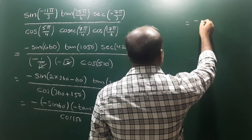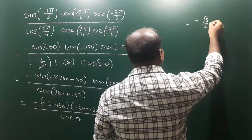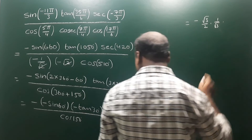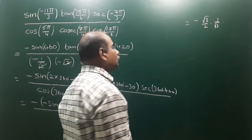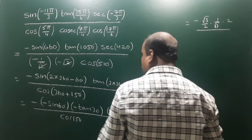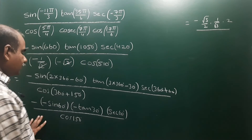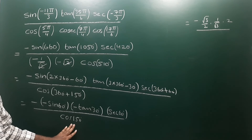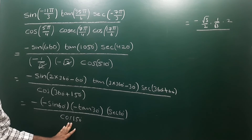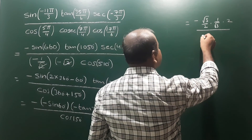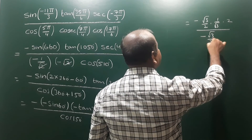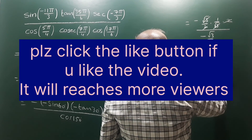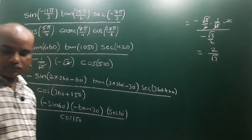So the expression becomes: (-sin 60°) × (-tan 30°) × sec 60° divided by cos 150°. That is: (-√3/2) × (1/√3) × 2, divided by cos 150°. cos 150° = cos(90° + 60°) — in the second quadrant cos becomes -sin — so cos 150° = -sin 60° = -√3/2. The √3 cancels, the 2 cancels, minus×minus = plus, so the final answer is 2/√3.